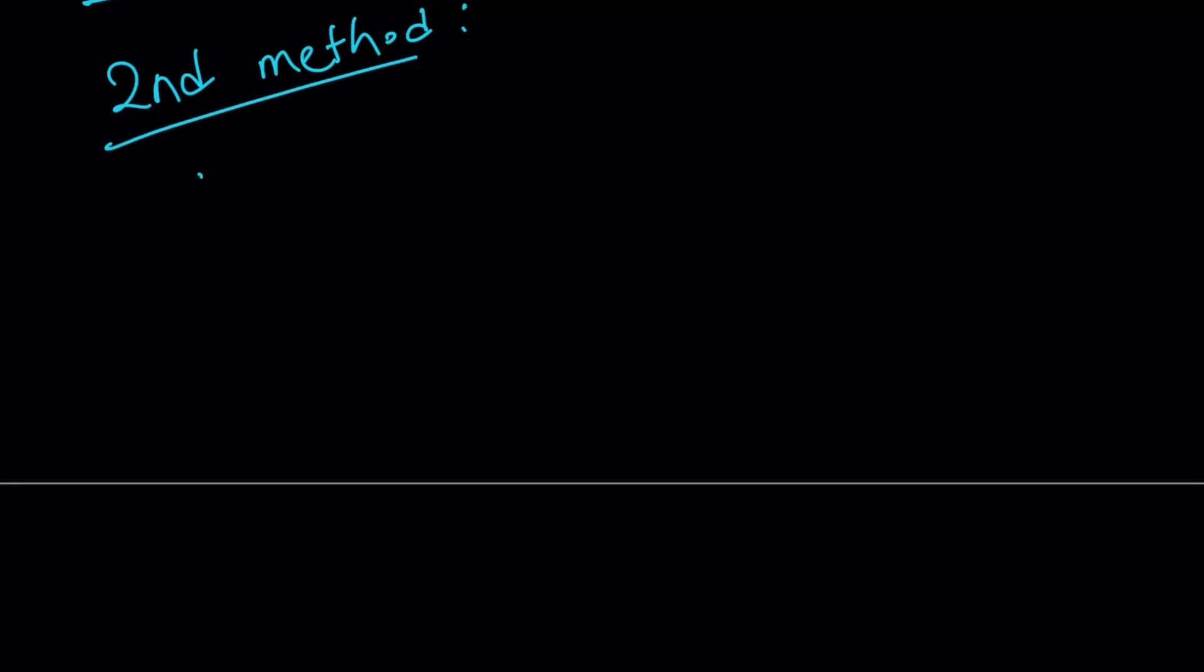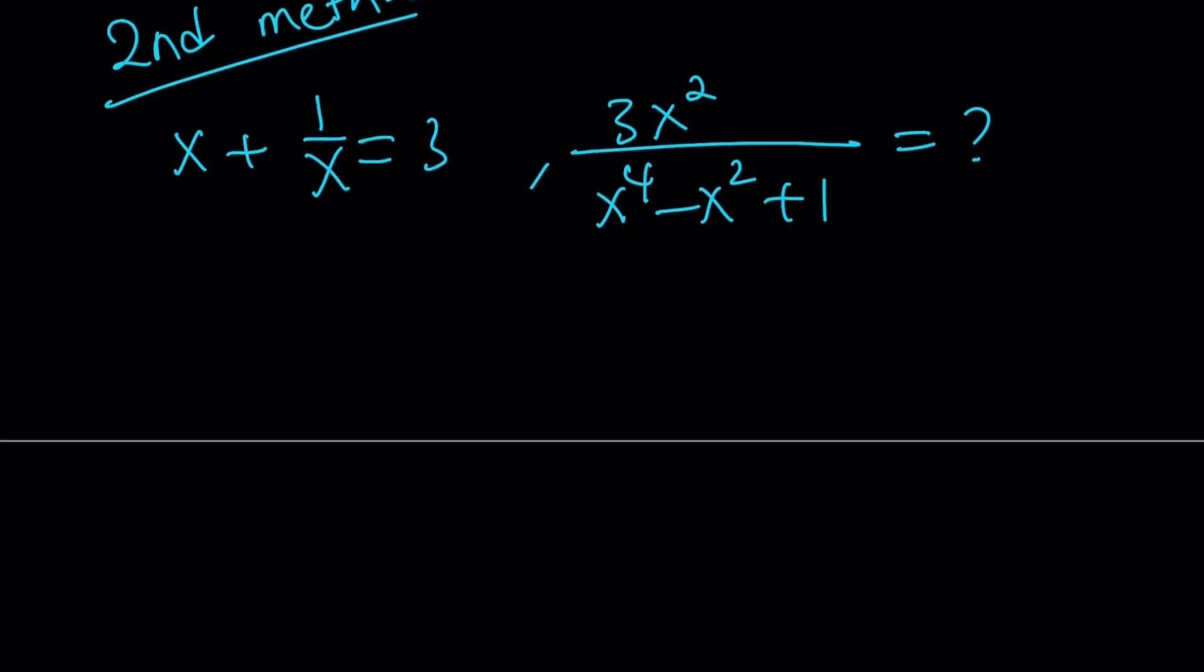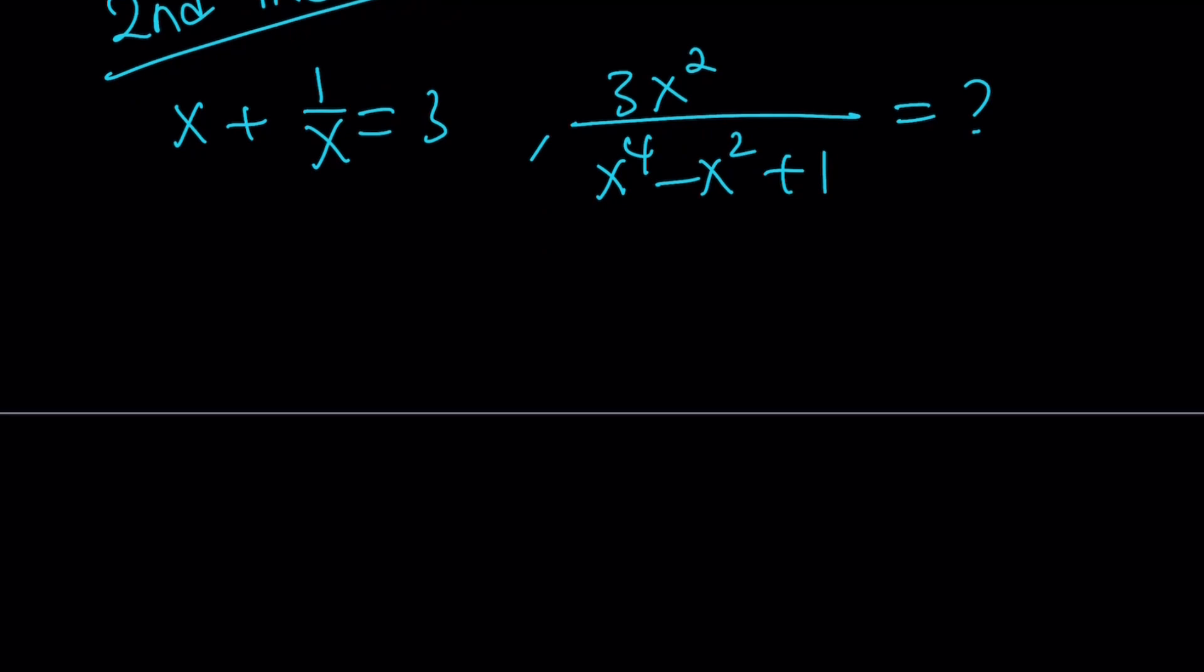Let me rewrite the question. We have x plus 1 over x equals 3, and we're supposed to evaluate 3x squared divided by x to the fourth minus x squared plus 1. So this is what we're trying to evaluate. I'm thinking the answer is 1 half, so that's kind of nice. But I noticed that I do see the x squared and x squared squared at the bottom. So this kind of tells me, and for these problems, this should be pretty stunning.